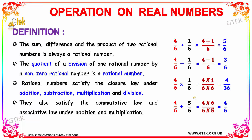Apart from that, the quotient of a division of one rational number by a non-zero rational number is also considered to be a rational number. The rational numbers tend to satisfy the closure law under addition, subtraction, multiplication, and division. Therefore, they also satisfy the commutative law and associative law in terms of addition and multiplication. These are the key points to keep in mind before solving these kinds of problems.